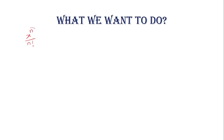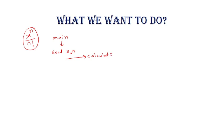Now initially, for this we need value of x and n. So in the main program we want to read value of x and n. This value we want to pass to one function — suppose the function name is 'calculate'. So we want to pass this value of x and n to the function calculate.